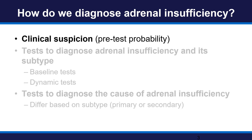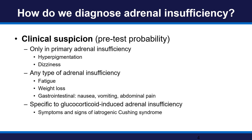Let's start with clinical suspicion. Symptoms of adrenal insufficiency that can be seen in any type include fatigue, weight loss, and gastrointestinal symptoms such as nausea, vomiting, and abdominal pain. Signs and symptoms seen only in primary adrenal insufficiency are those related to aldosterone deficiency such as dizziness, or elevated ACTH such as hyperpigmentation. Symptoms and signs specific to glucocorticoid-induced adrenal insufficiency include those of iatrogenic Cushing syndrome.